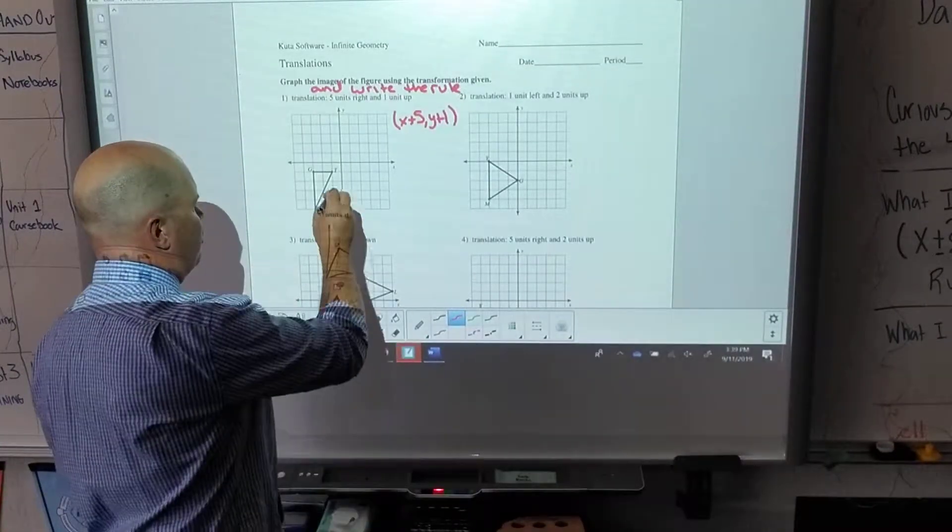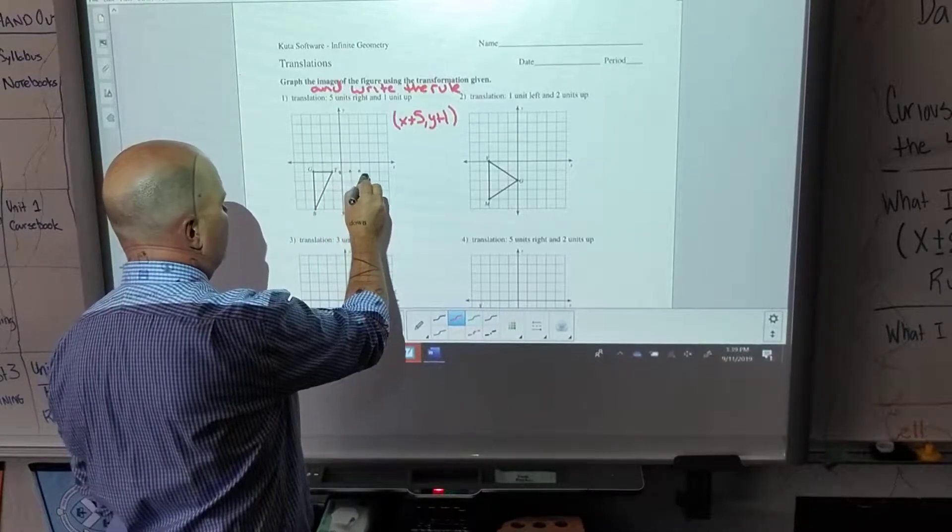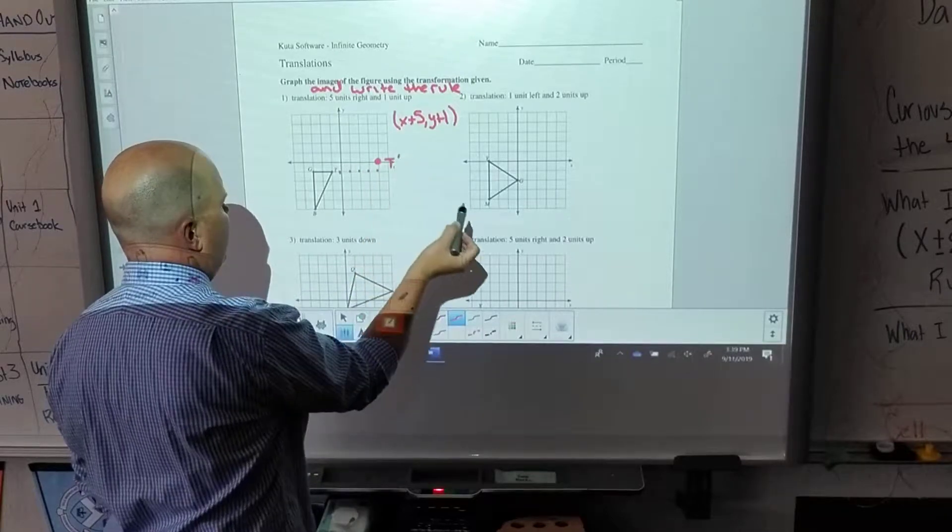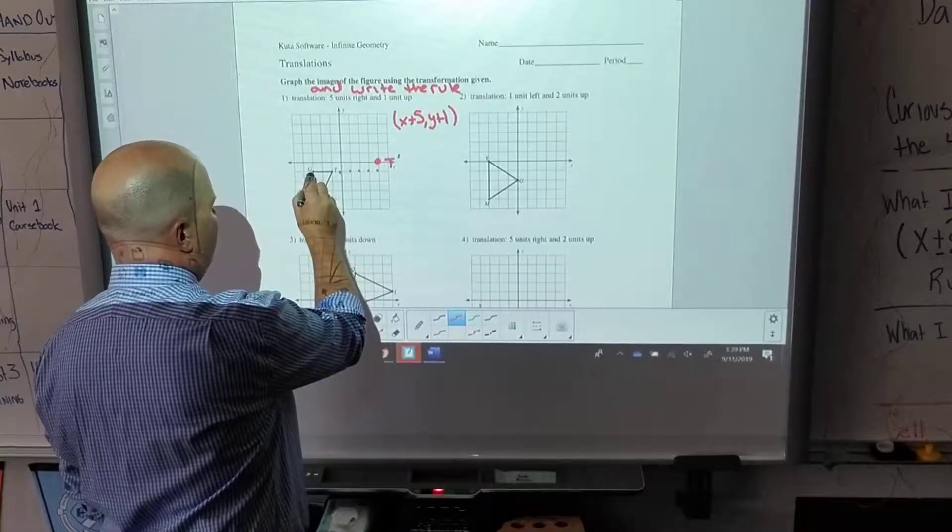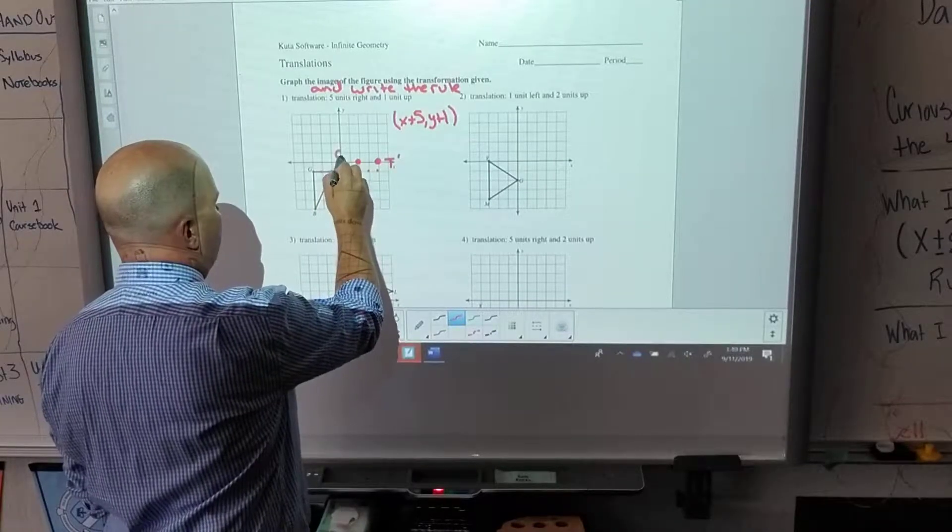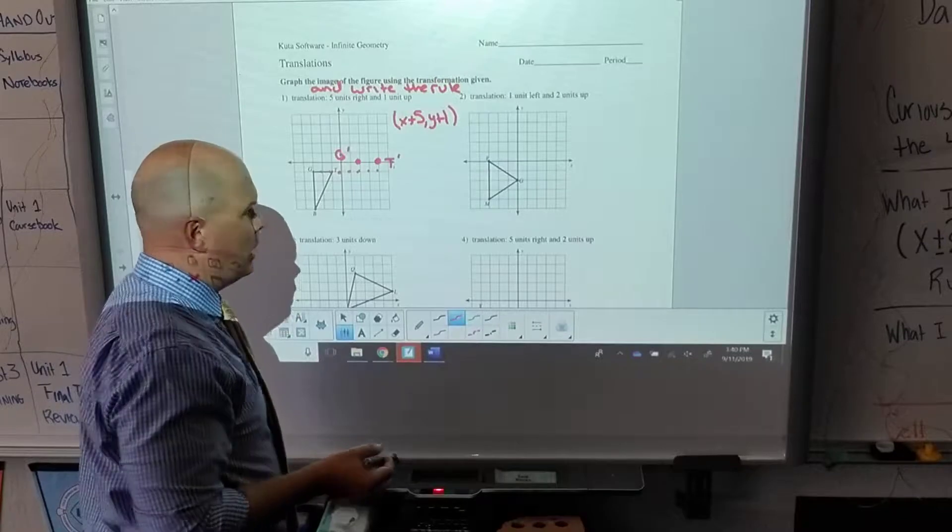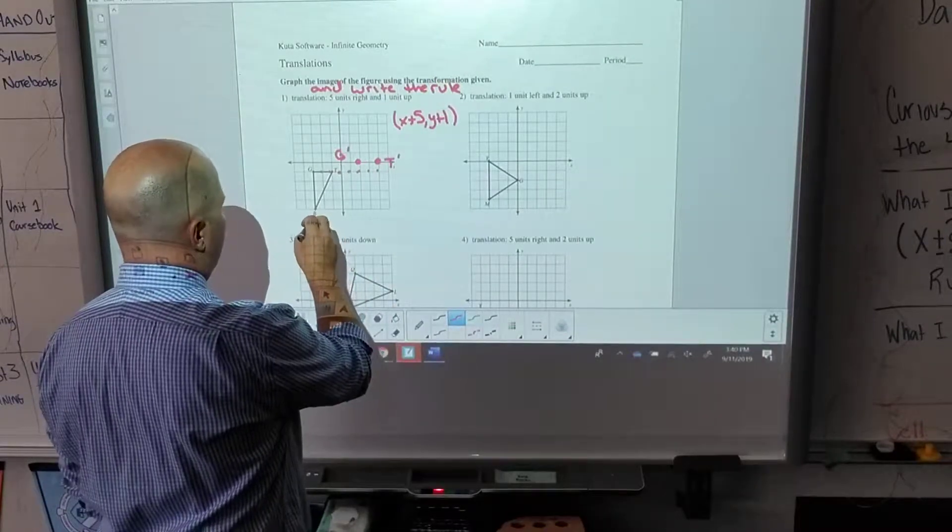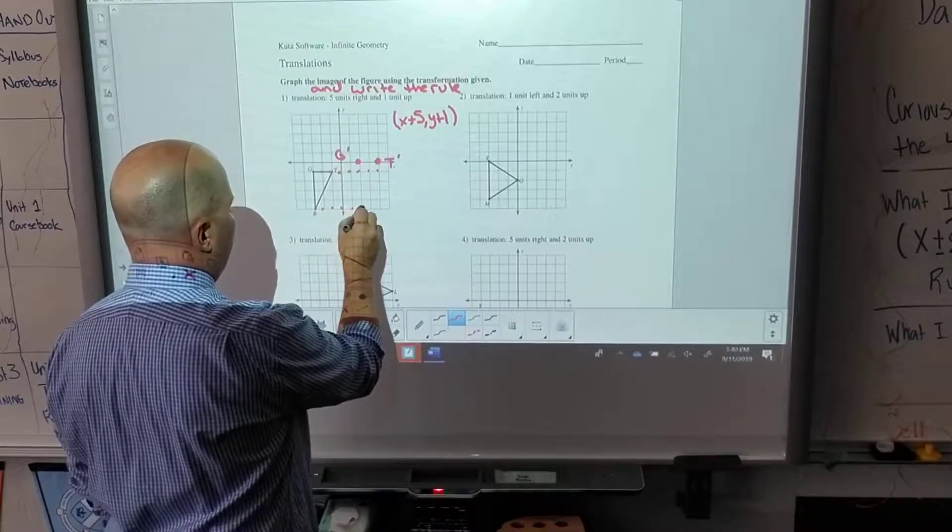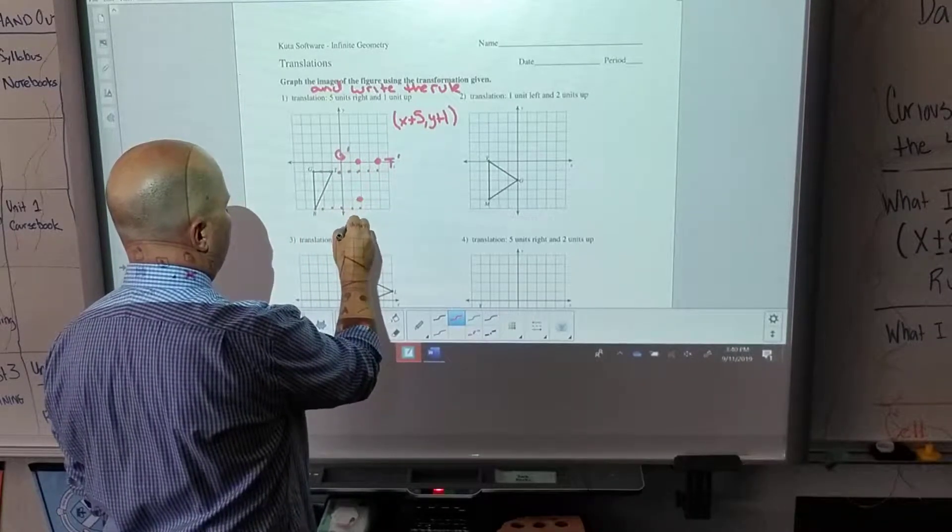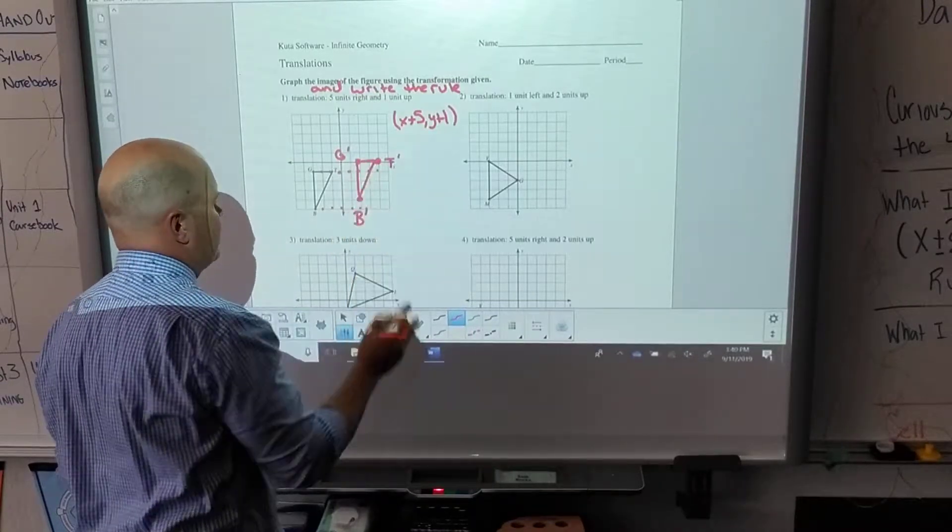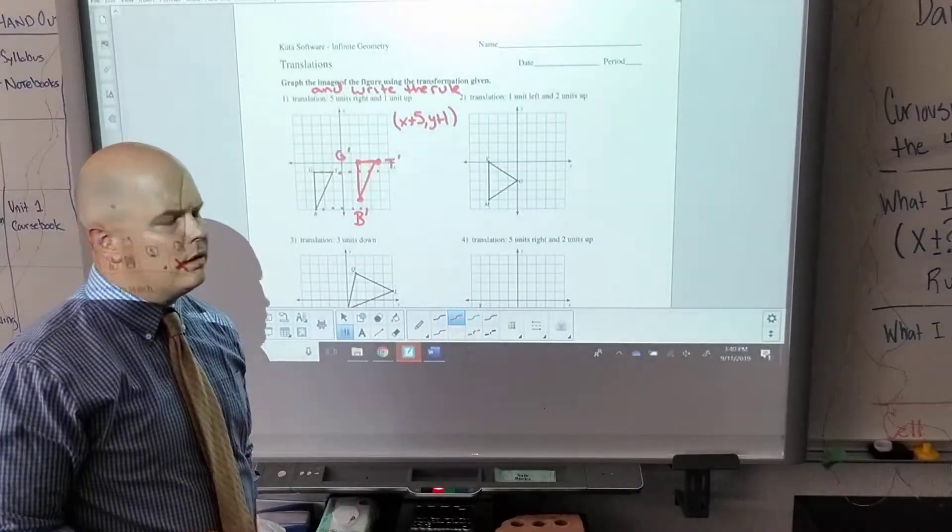Now that's my rule. So what I'm going to do now is just apply that rule to the shape. I'm going to start with point T and I'm going to go one, two, three, four, five, one - there is T prime. I'm going to take G, go one, two, three, four, five, up one - there is G prime. And last but not least, I'm going to take point B, one, two, three, four, five, and one up - there's B prime. Now I have it shifted.